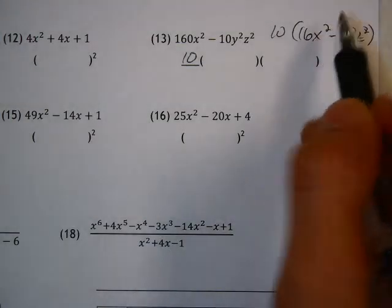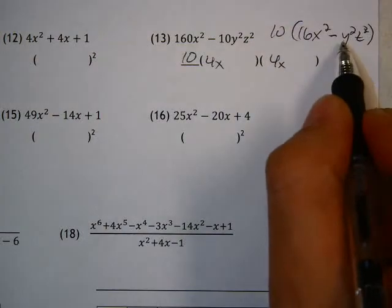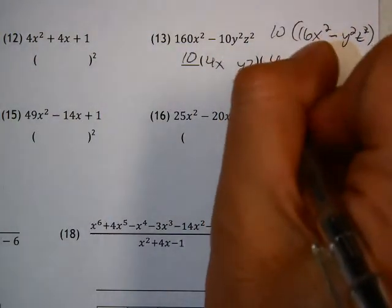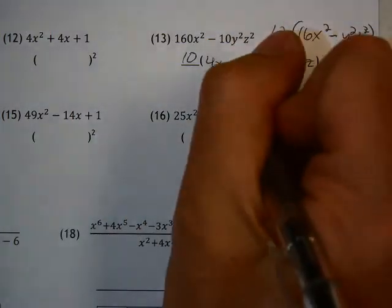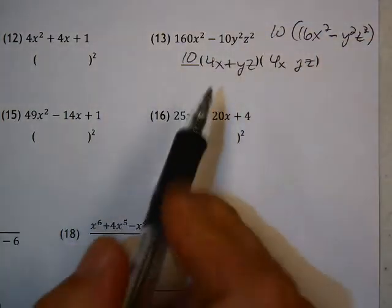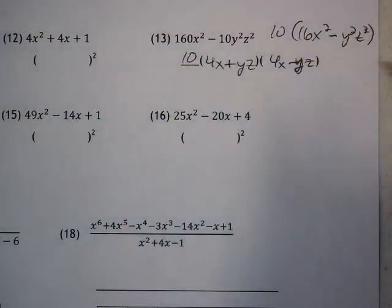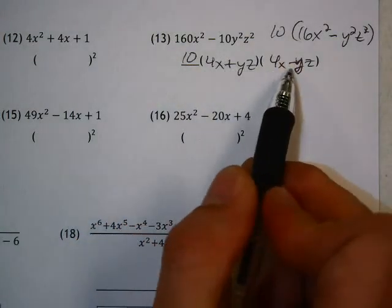The square root of 16x squared is 4x. The square root of y squared is y. The square root of z squared is z. So this is difference of two squares, which means I just need one term to be plus, one to be minus. So my factored form is 10 times 4x plus yz times 4x minus yz.